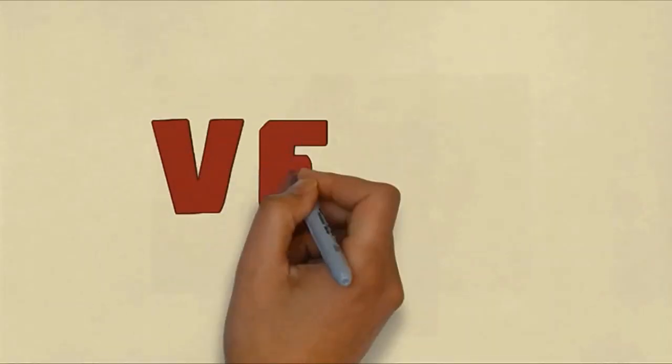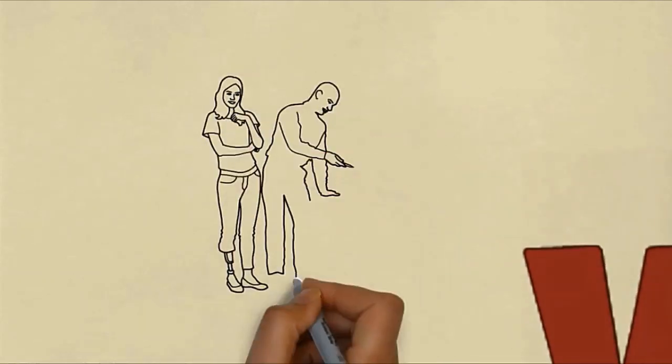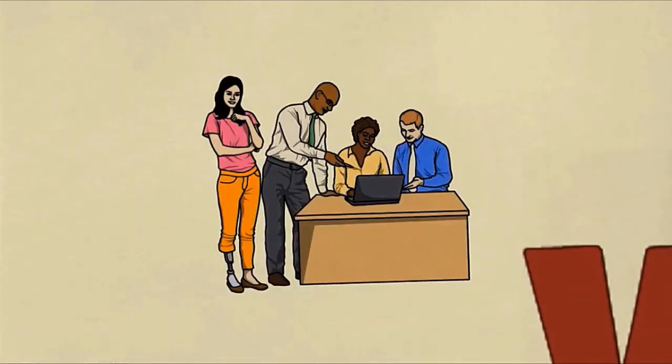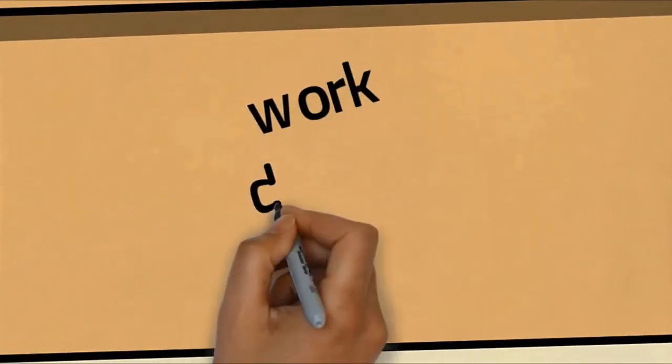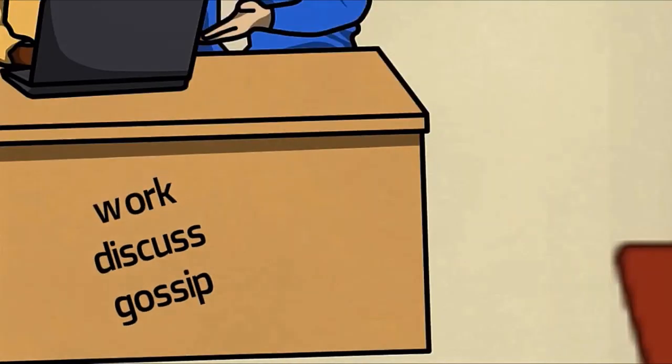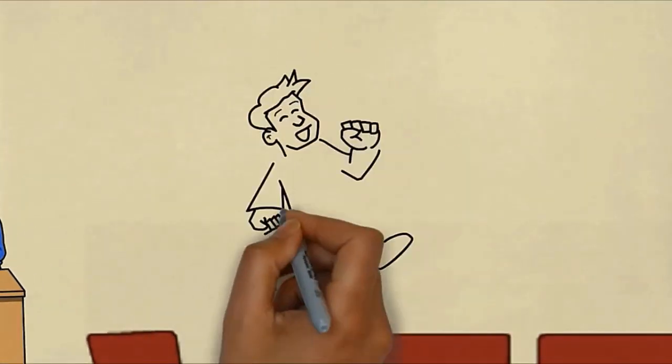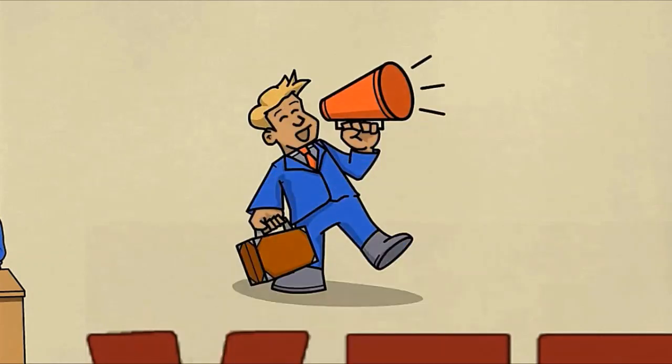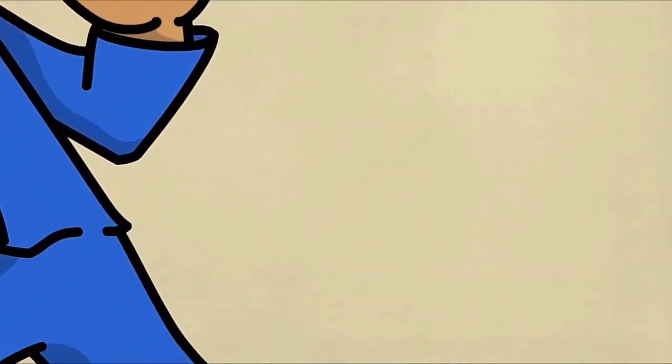Now let's move on and talk about verb. Verb is kata kerja. What are verbs? Verbs show action. For example, in this picture we can see what they're doing - work (bekerja), discuss (berdiskusi), or gossip maybe. While this man, we see he is talking (berbicara), speaking, or maybe announcing (mengumumkan).